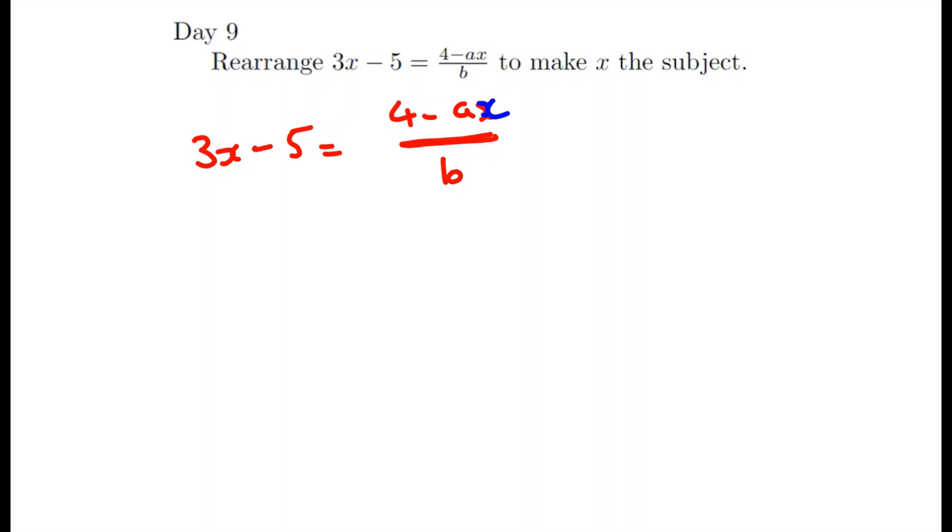We're going to have to clear this fraction first. We're going to multiply both sides by b. Now on this left hand side we're multiplying everything by this b. We can put it in brackets or we could just do this individually. I'm going to do it individually to save some time.